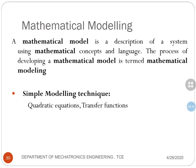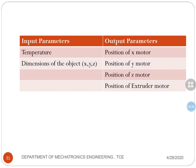Mathematical modeling is a technique and description of a system using mathematical concepts and language. The process of developing a mathematical model is termed as mathematical modeling. As far as 3D printers are considered, input parameters are temperature and dimensions of the object using the STL 3D file. The output parameters are the position of the x motor, position of the y motor, position of the z motor, and position of the extruder motor.